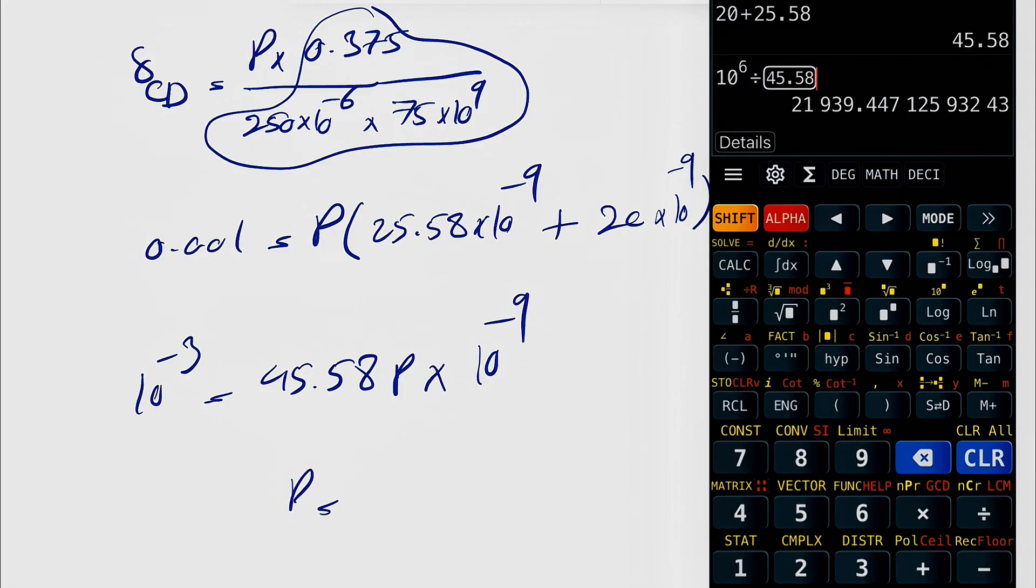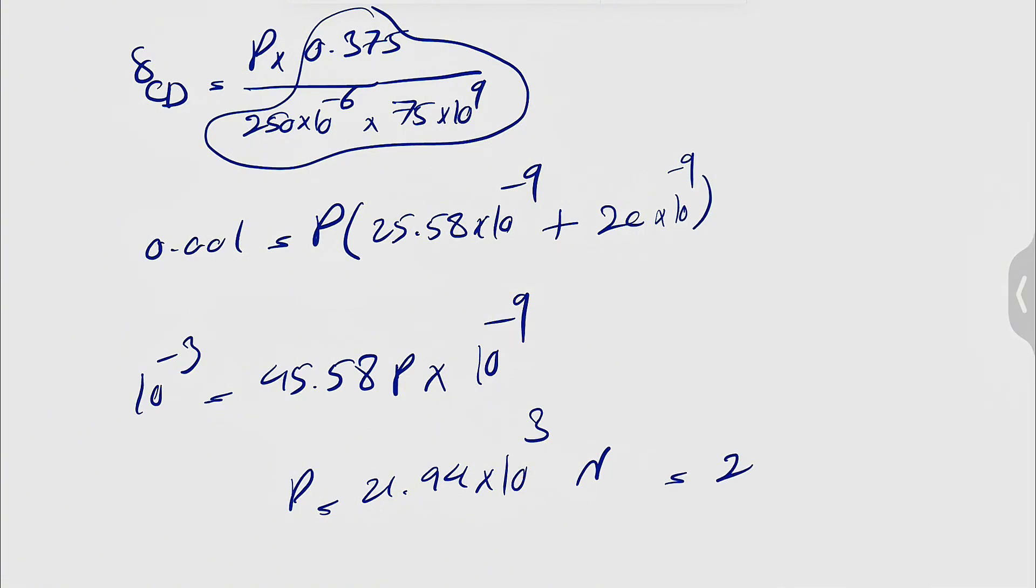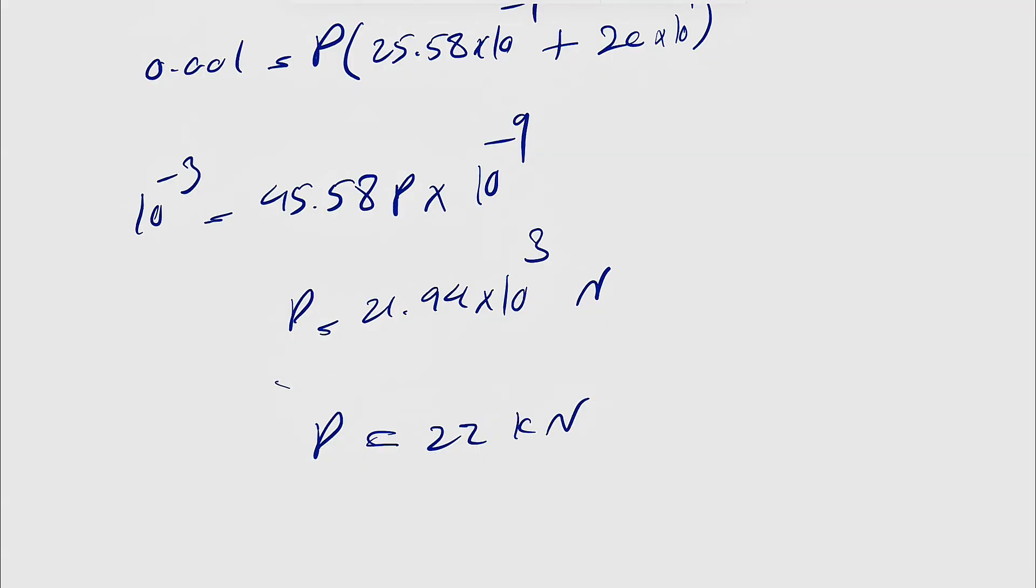So basically we have 10 to the 6 divided by our answer. So P will be, if we just do this, 21.94 times 1000 newton, or we can just report it as kilonewton, like around 22 kilonewton.